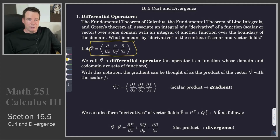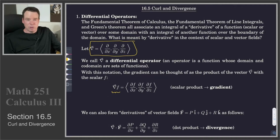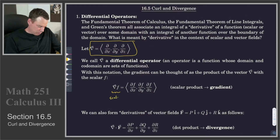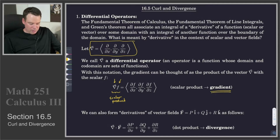Under this notation, we can revisit the gradient of a scalar function. We can think of it as scalar multiplication: take your scalar function f and scalar-multiply it to our differential operator del. That gives us ∂f/∂x, ∂f/∂y, ∂f/∂z — which is our gradient. So we can think of this as a scalar product of our differential operator with our scalar function f, and what it does is return a vector function.